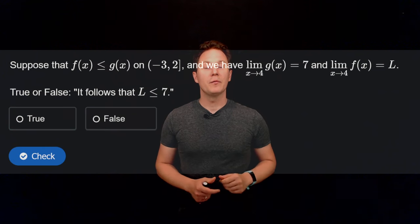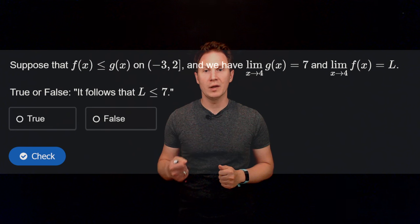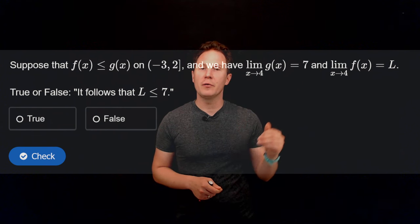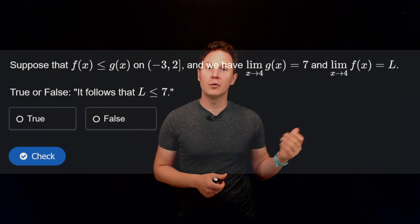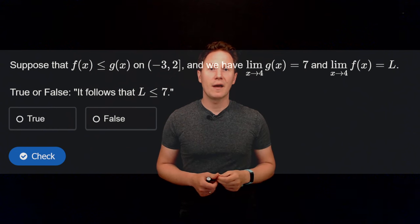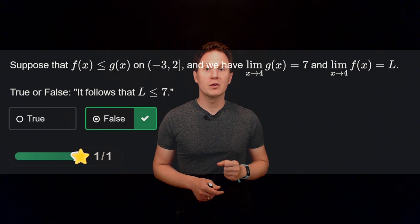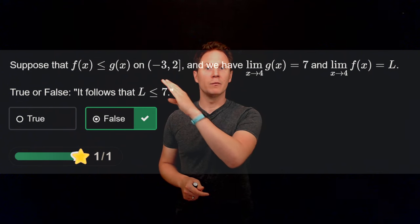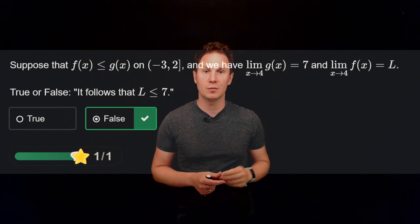Next: f(x) is less than or equal to g(x) on the interval between negative 3 and 2, with negative 3 not included and 2 included. We know that the limit as x approaches 4 of g(x) equals 7, and the limit as x approaches 4 of f(x) is equal to l — we know it exists but not its precise value. Is it true or false that l is less than or equal to 7? This implication is false because x approaches 4, which is outside the interval where we actually know how the two functions are related, so we cannot make any implications about that limit l.